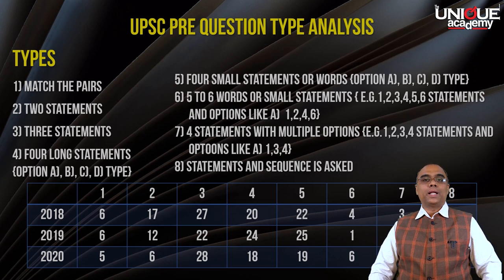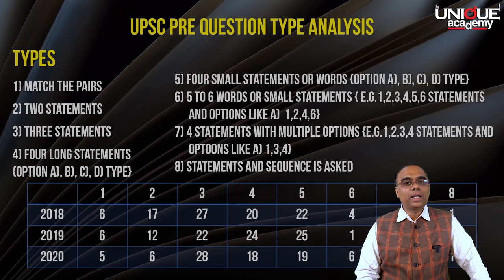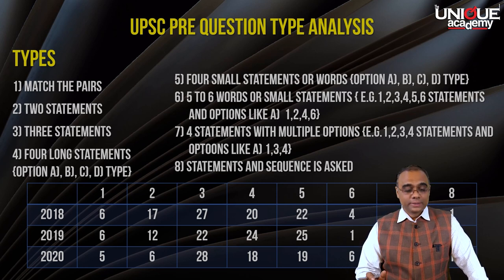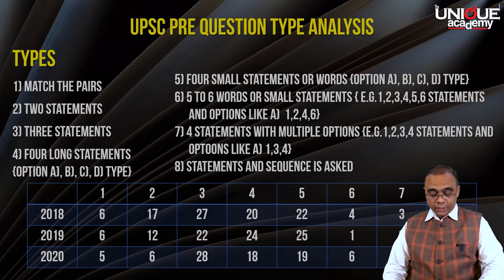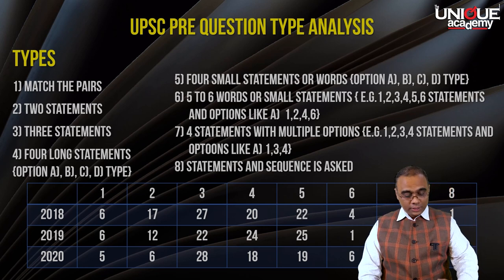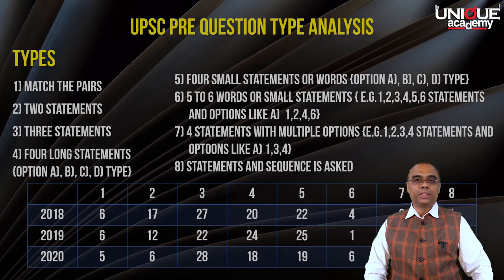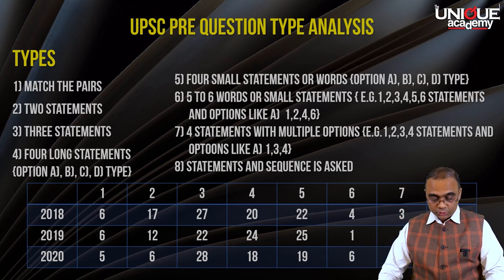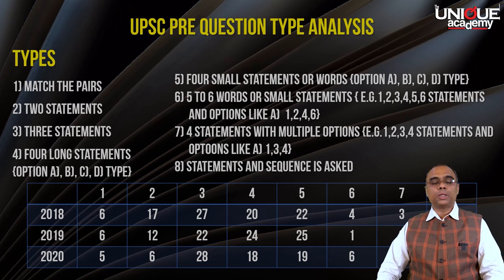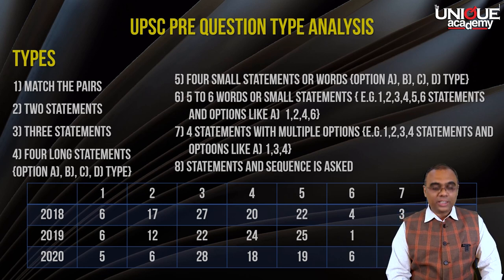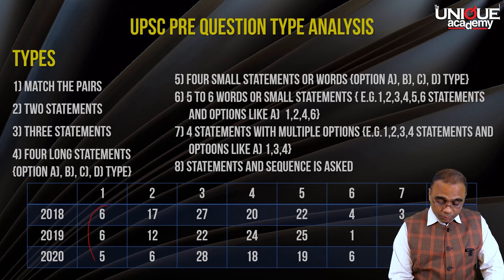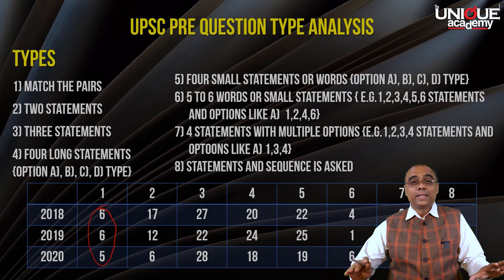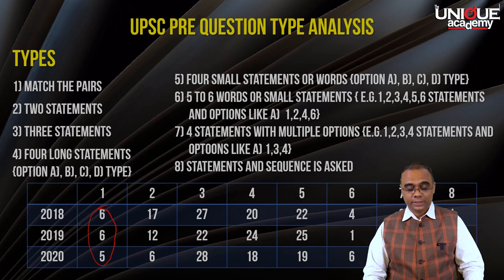Next is an important section: UPSC Pre-question type analysis. We have analyzed previous year UPSC question papers and segregated these questions into a number of types — almost eight types. For example, the first type is 'Match the Pairs.' In 2018, 2019, and 2020, around six questions are asked on Match the Pairs. We will try to maintain this type of distribution in the test series.